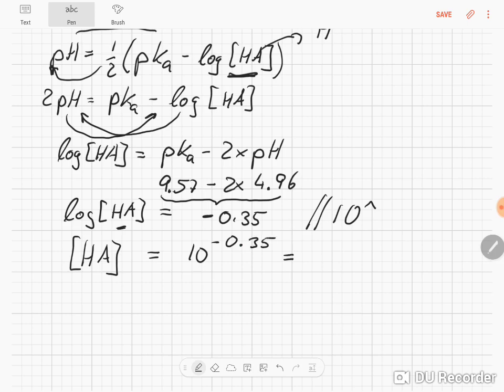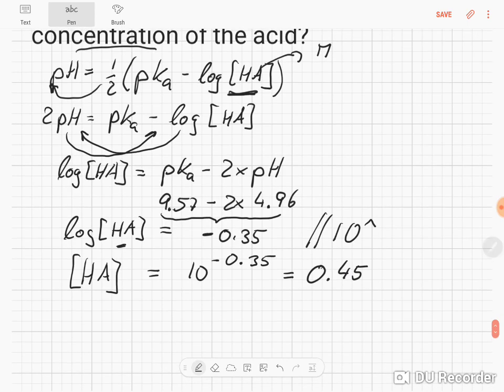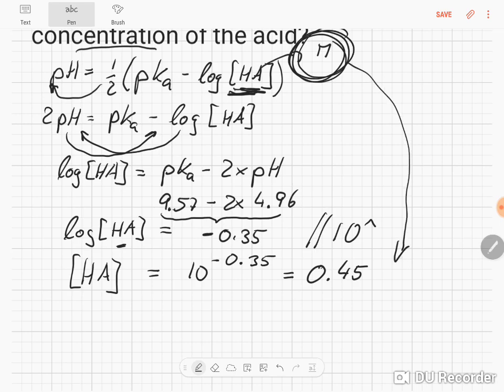And when we put that into the calculator, we get 0.45. Now obviously this needs a unit and we know that our acid concentration needs to be in molar. So we know that this is 0.45 molar.